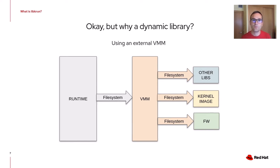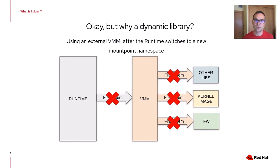Some of you may be wondering why implement a VMM as a dynamic library. Let me explain this with an example. Imagine you have a runtime and you want that runtime to execute a VM using an external VMM. The runtime needs to locate the VMM binary through the file system, and that VMM binary may also need to locate other components through the file system — such as libraries, a kernel image, or firmware. This is not a problem in itself, but it may become one if the runtime intends to switch between different namespaces. If the runtime switches to a different mount namespace, it won't be able to locate the VMM binary, and even if it could, the VMM binary won't be able to locate its own dependencies. This means the runtime would need to carry the VMM and all its dependencies between mount namespaces, which is complicated and not very efficient.